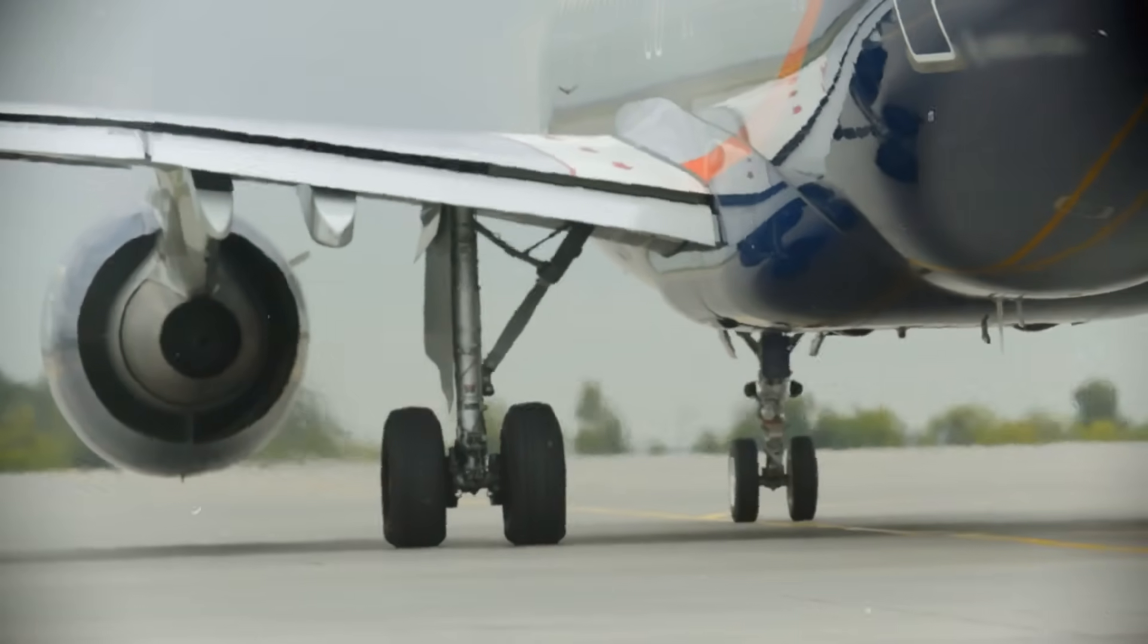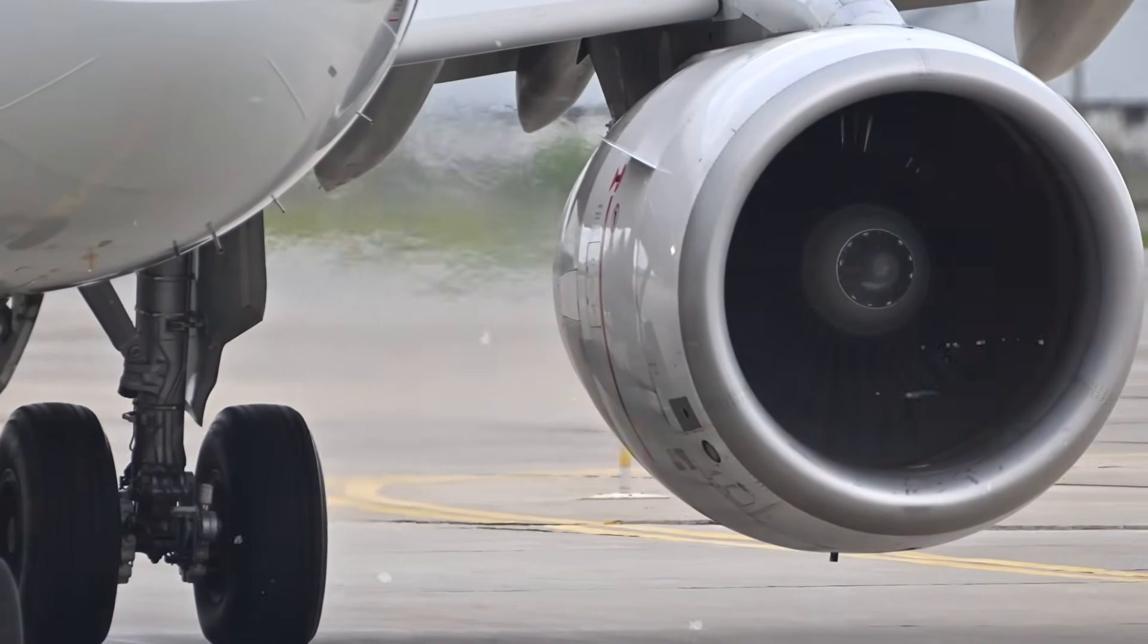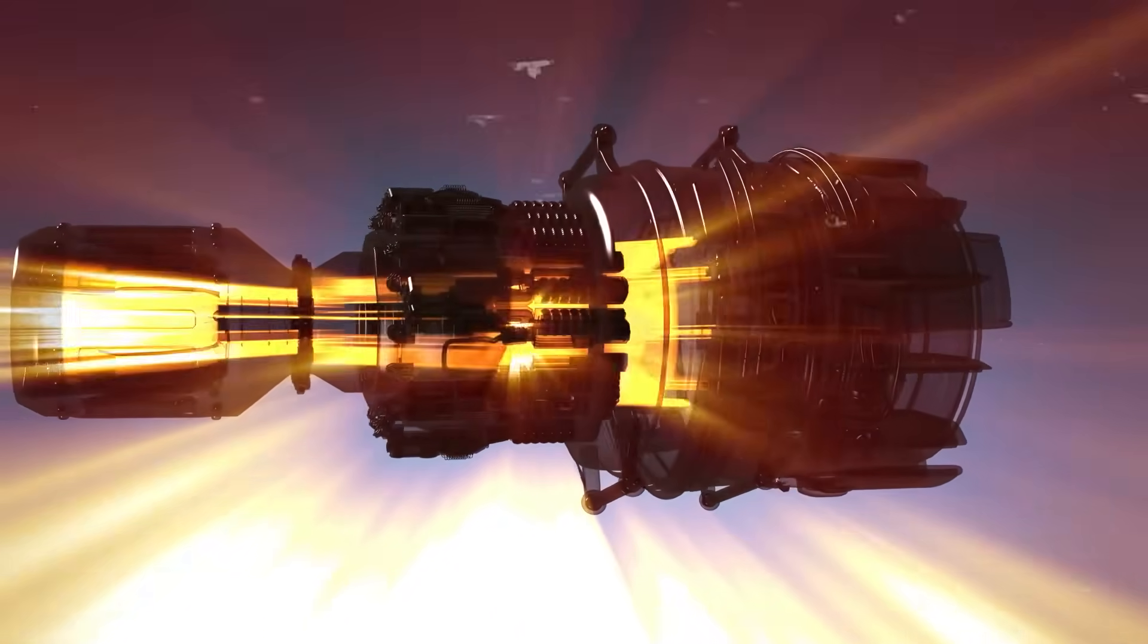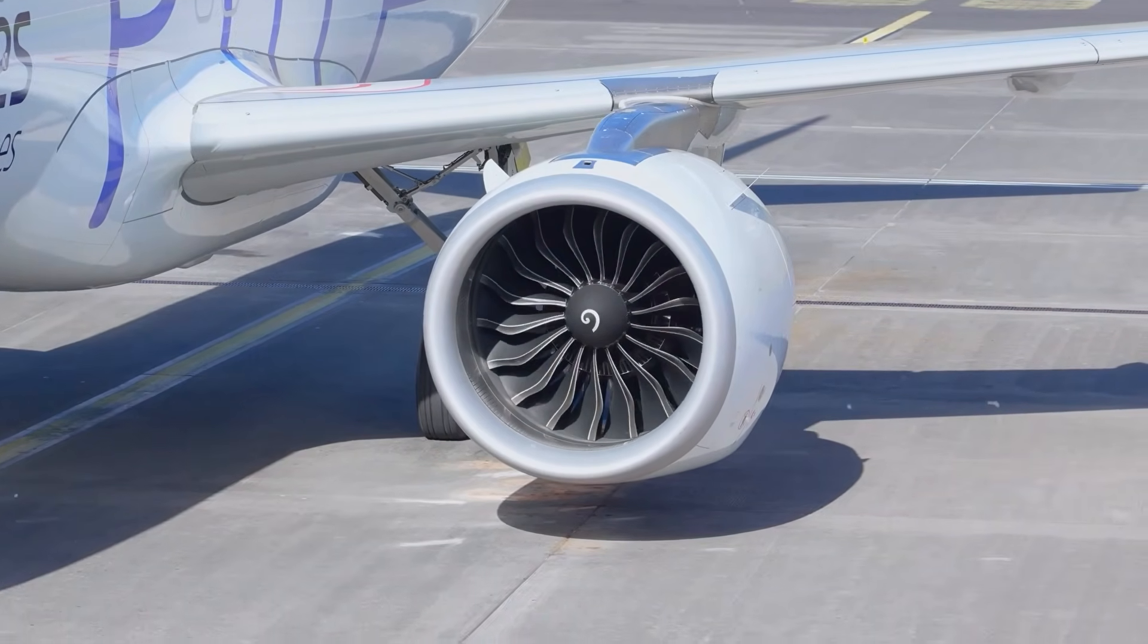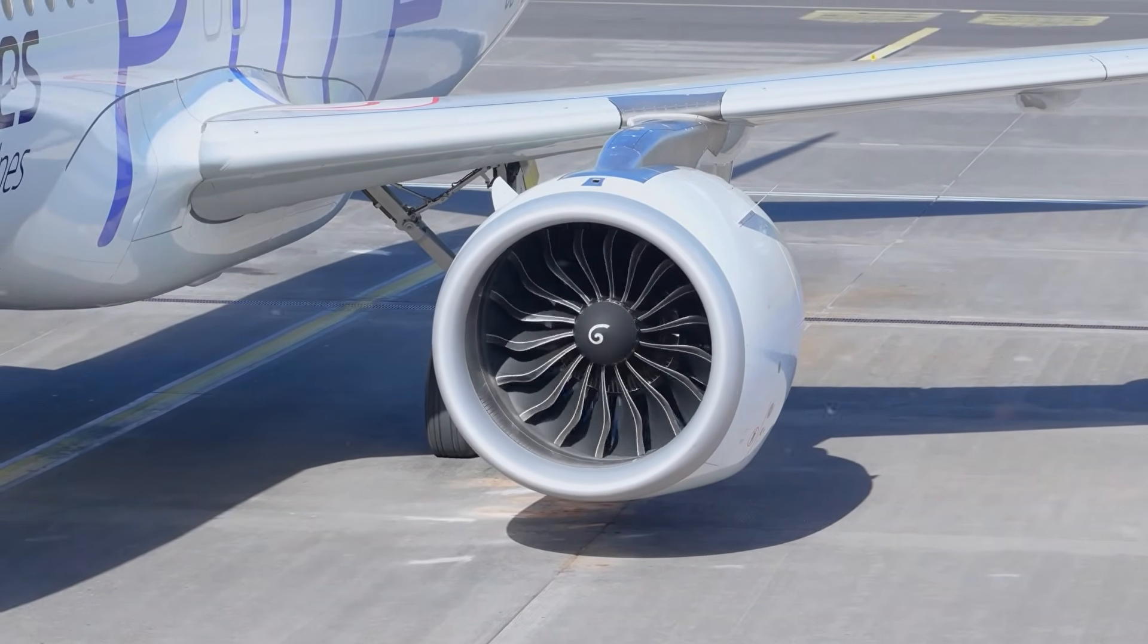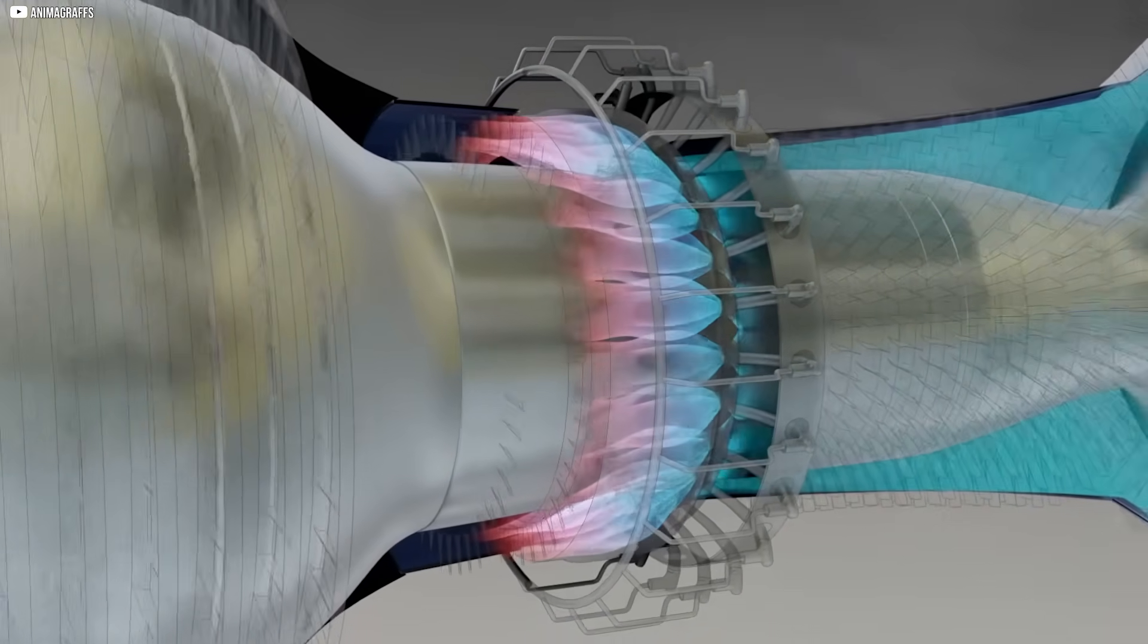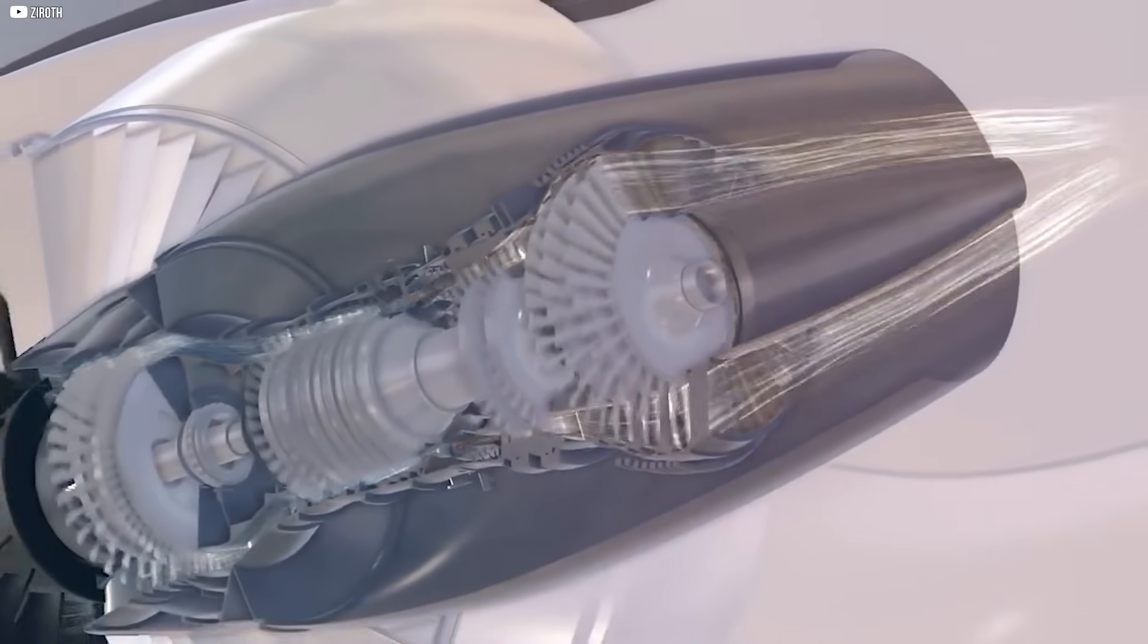A turbine powered by these gases spins the compressor blades, keeping the process continuous. But there are key differences. Hydrogen burns hotter and faster than conventional jet fuel, demanding redesigned combustion chambers and tougher materials to handle extreme temperatures. The fuel system itself must convert liquid hydrogen into gas and carefully control its delivery to ensure a steady, stable flame.